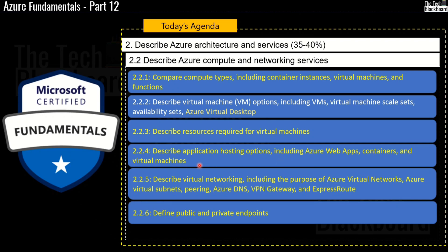Section 2.2.5 will cover describing virtual networking, including the purpose of Azure virtual networks, Azure virtual subnets, peering, Azure DNS, VPN Gateway and ExpressRoute. And finally we will also cover defining public and private endpoints.